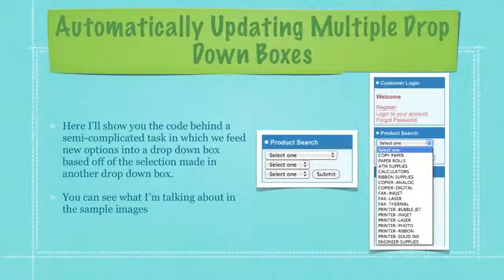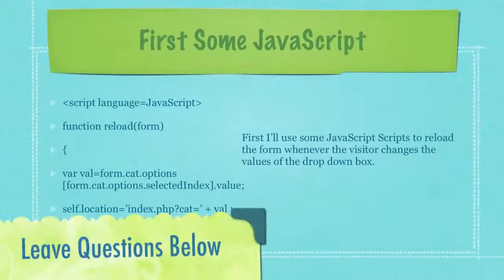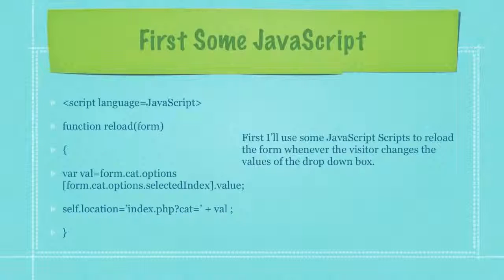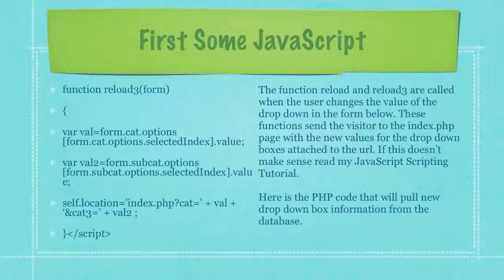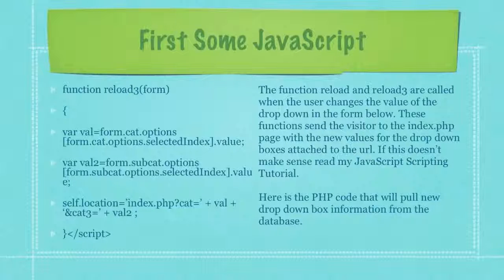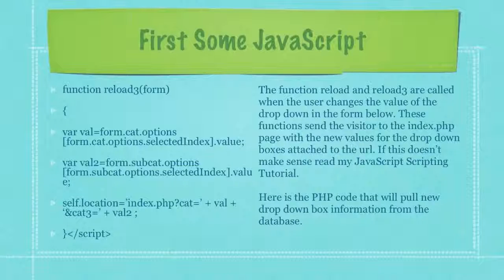You can see what I'm talking about in the sample images to your right. First I'll use some JavaScript scripts to reload the form whenever the visitor changes the values of the drop-down box. The functions reload and reload three are called when the user changes the value of the drop-down in the form below. These functions send the visitor to the index.php page with the new values for the drop-down boxes attached to the URL. If this doesn't make sense you should definitely look into my JavaScript scripting tutorial.